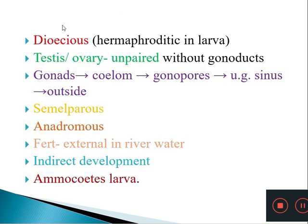Coming to reproduction, Petromyzon is dioecious — sexes are separate — though in larval stages they are hermaphrodite, later differentiating into males and females. Adults have separate sexes; males have testes and females have ovaries, and these sex organs are unpaired and lack gonoducts — the testis lacks a sperm duct and the ovary lacks an oviduct.